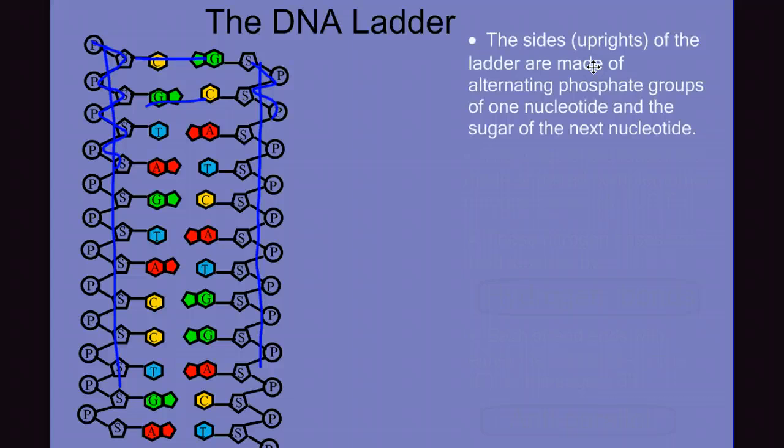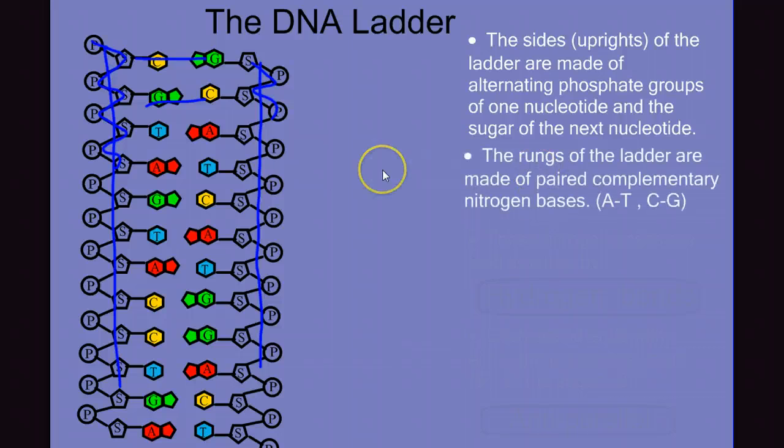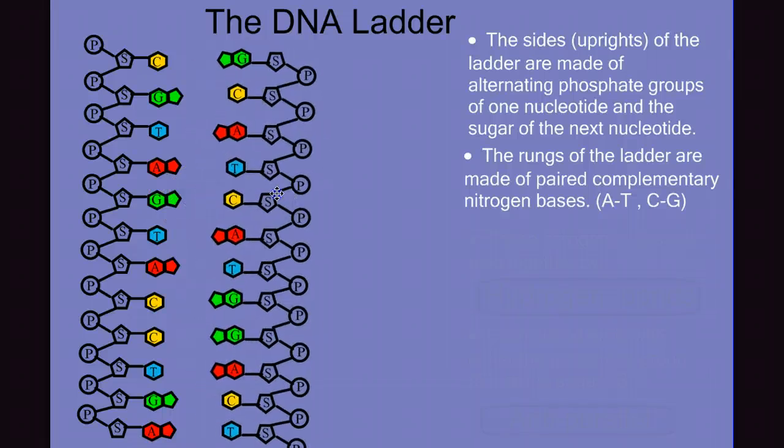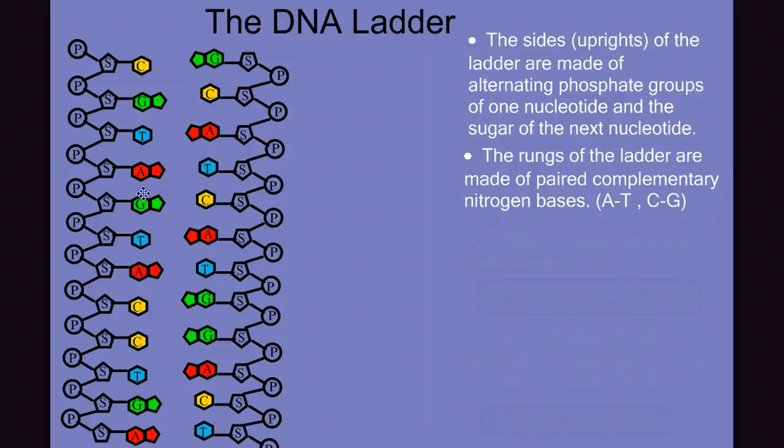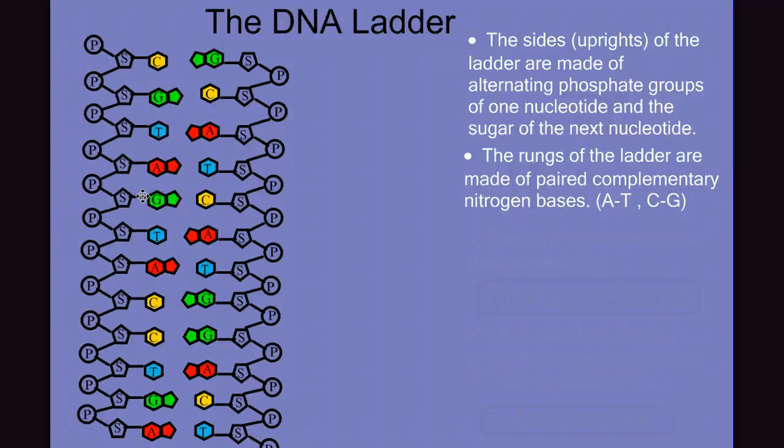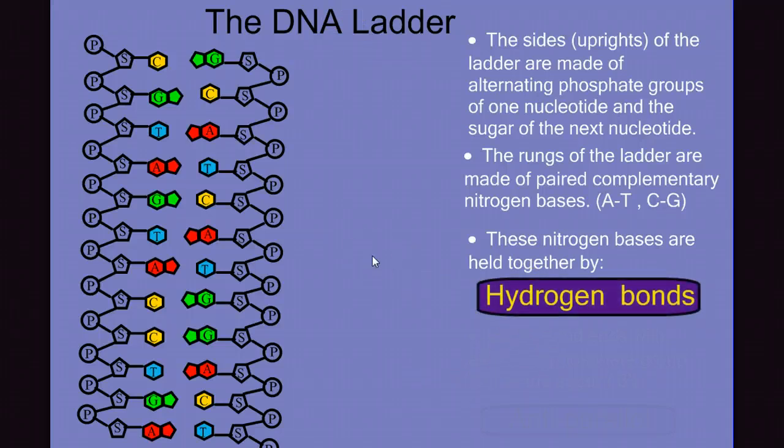We can see that the sides or uprights are made of alternating phosphate groups of one nucleotide with the sugar of the next. And the rungs of the ladder are made of pairs of complementary bases, A's with T's and C's with G's. Now at this point we have two distinct strands, and we have to find a way to connect them together. So we need to look at what's holding these bases together. It turns out that these base pairs are held together by hydrogen bonds.